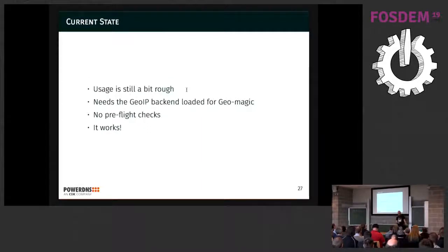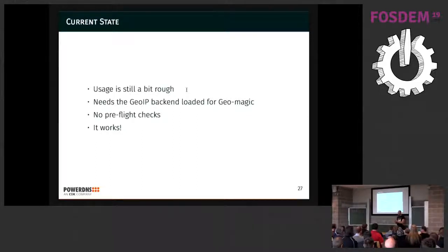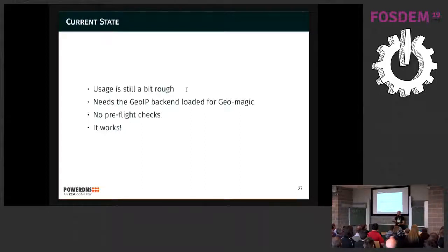The current state: as I was writing these slides and playing around with it, the usage is quite rough and error messages are not super good. Right now, if you need to use the GOIP magic, you need to start the GOIP backend — we'd like to take this out and just enable GOIP from the server configuration without needing the GOIP backend. There are no pre-flight checks: if you put LUA in there, you will only see an error once the record is retrieved. But it works, and you can do a lot of fun experiments. Go to powerdns.org — there's a link there where you can see latitude, longitude, and other fun things.